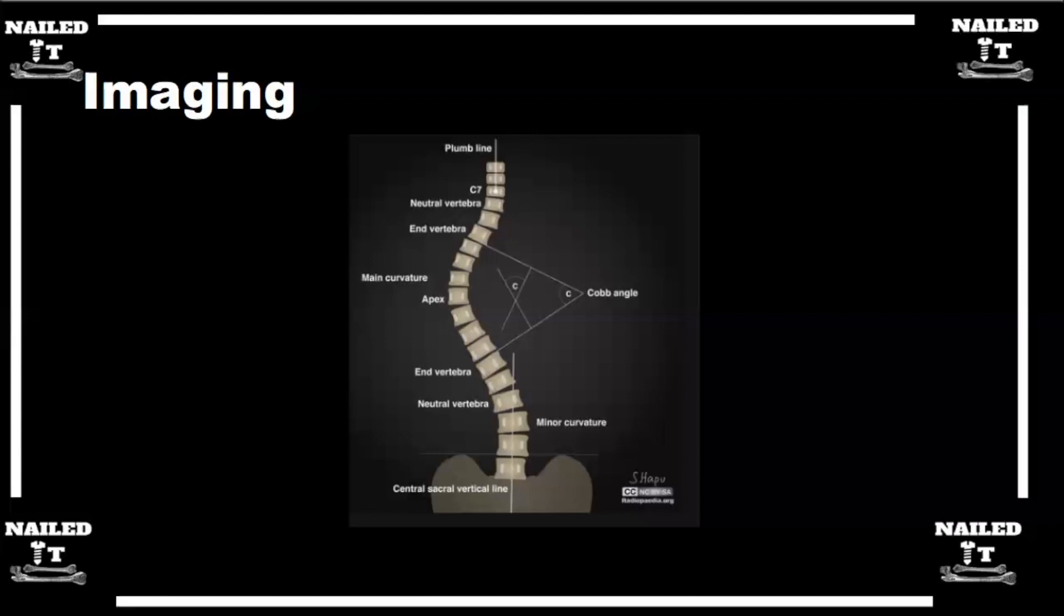As far as when we talk about the end vertebra, the end vertebra means the end of your Cobb angles. Wherever you drew your Cobb angles from, those are your end vertebra. That's the easiest way to remember it.